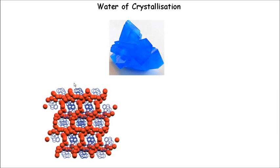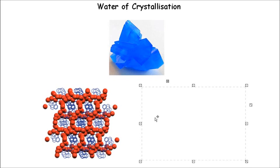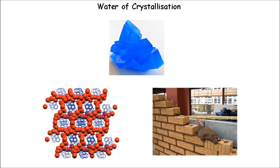You don't necessarily need to know what this looks like, but it just helps with our understanding. So here we've got these blue molecules — these are the compounds, the part of the compound we're interested in. This is the copper sulfate in our copper sulfate crystal. These red bits that surround it are the water of crystallization. The water isn't actually part of the compound itself, but it helps make up its crystalline structure. To simplify that, this is how I think about it.